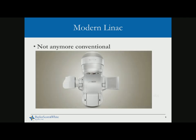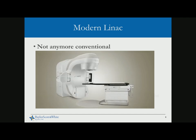Modern LINACs are not conventional anymore — if you look at the TrueBeam, it has a very sleek design. These machines now have imaging components, which didn't exist when TG45 was written in 1994. We also have 6D couches for radiosurgery machines and carbon fiber couches for RapidArc — we need criteria for accepting those. MLCs are becoming more sophisticated, with Elekta MLCs reaching speeds up to 5 cm per second.